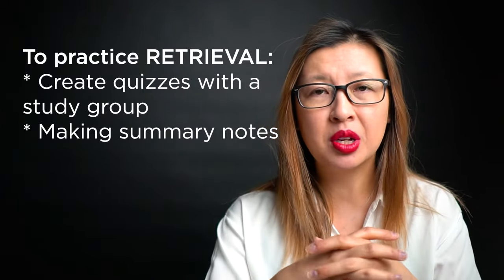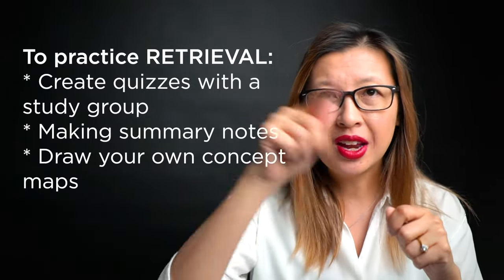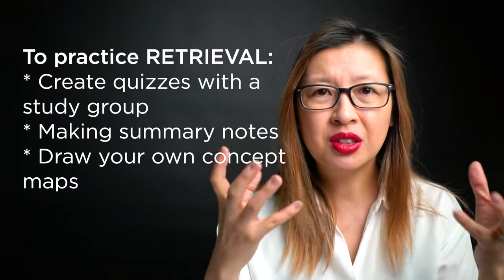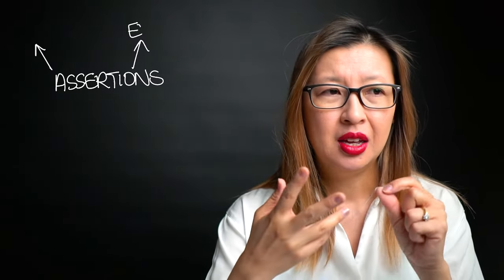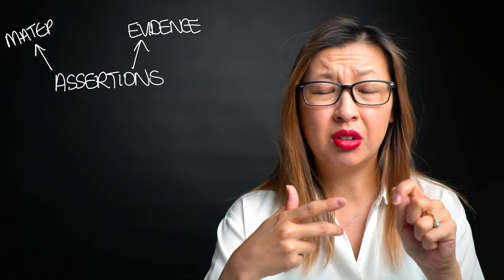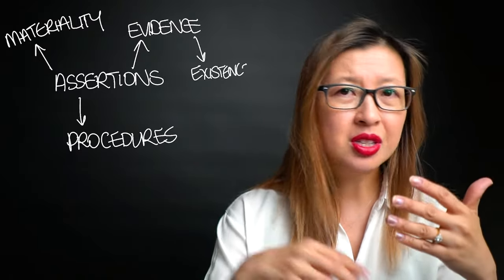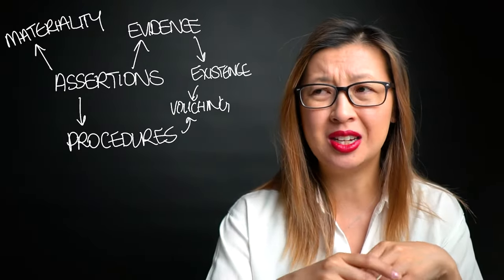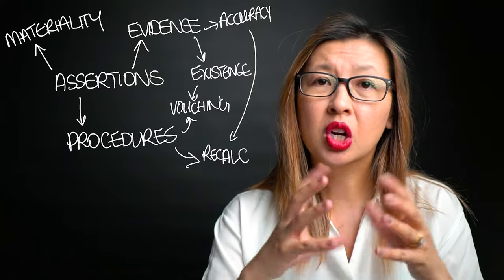Another way to practice retrieval is something called a concept map. You might take ideas related to assertions and draw a spider diagram showing how many things could be related — what's related to evidence, materiality, procedures. For example, for the existence and occurrence assertion you're going to need to do more vouching; for the accuracy, valuation, and allocation assertion you'll probably need to do some recalculation. The more you can link your audit concepts together to draw a concept map of what the audit standard is about, the better your brain will be at retrieving that information from memory.